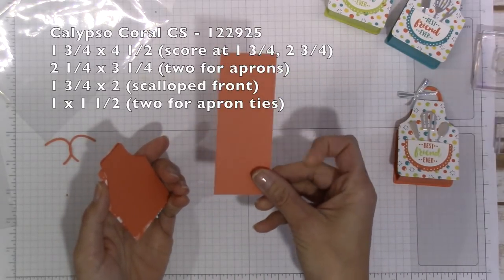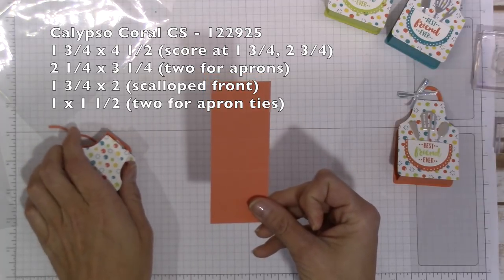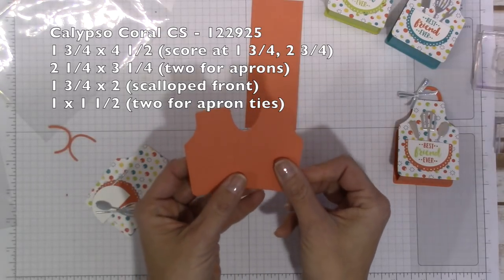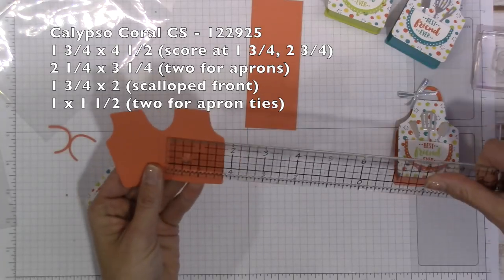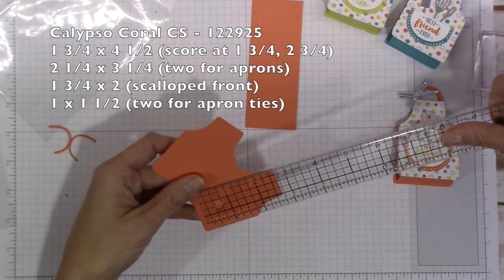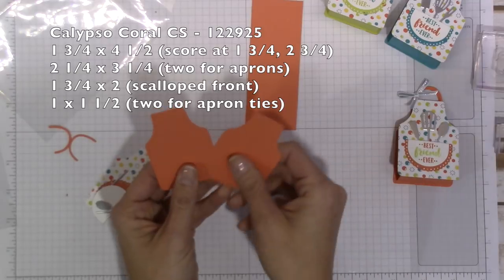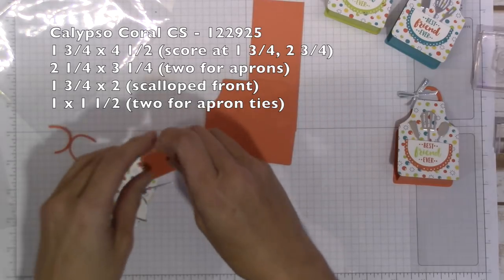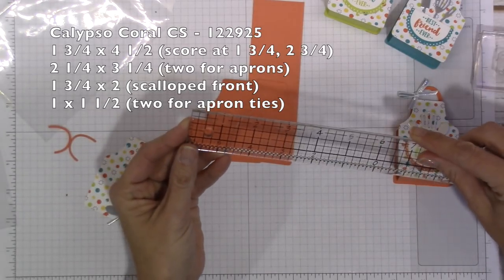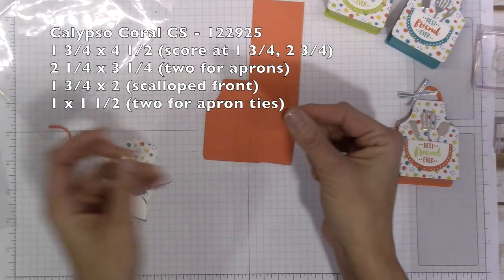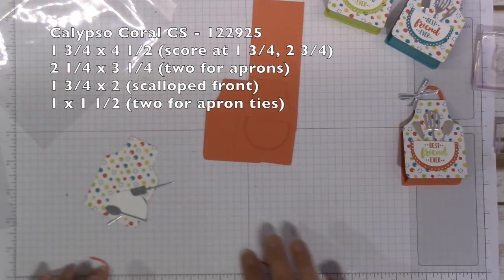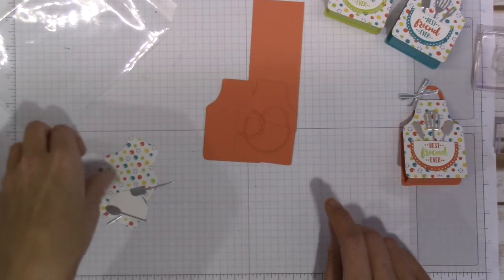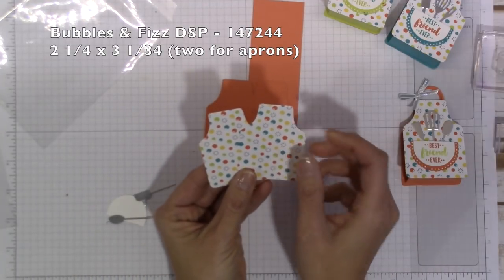The actual paper for this really is minimal. So I have a one and three-quarter inch by four and a half Calypso Coral, and then you're going to need two of these little aprons which are two inches by about three, so I would say two and a quarter by three and a quarter to make the aprons. And then this little tiny piece of the apron here, so this is maybe a two by two inch square would cover that, maybe a little bit extra. And then I have these two little handles as well that go with that Calypso Coral.